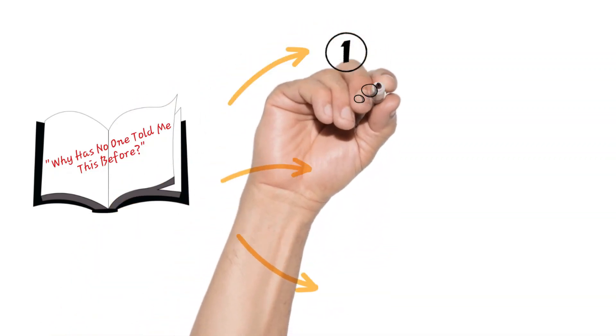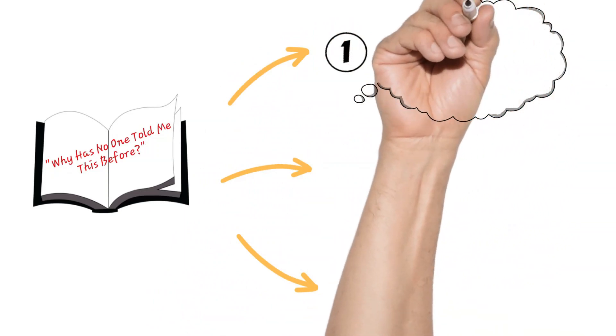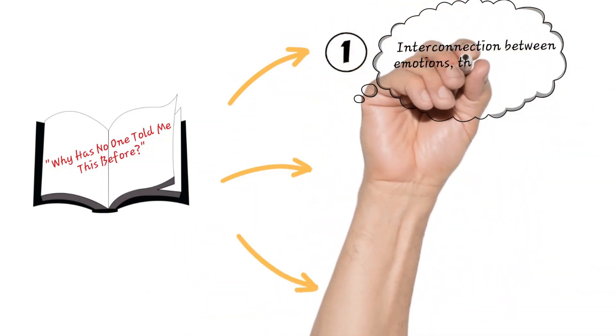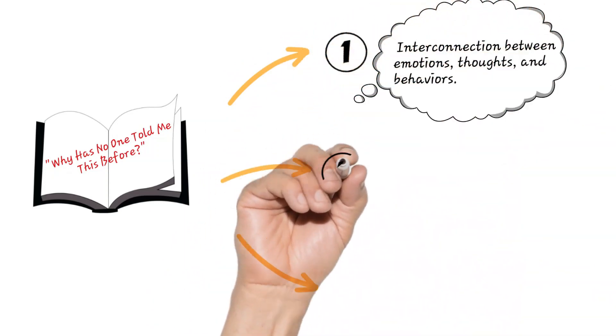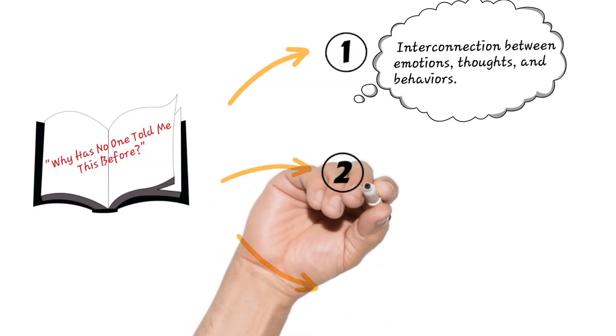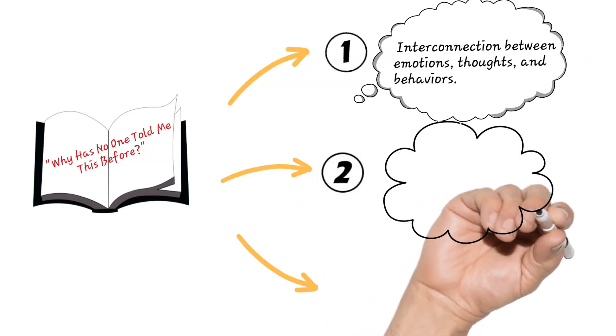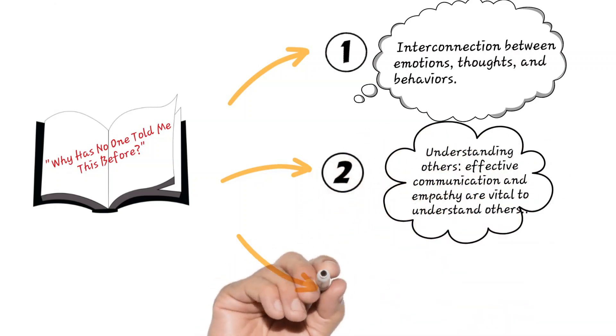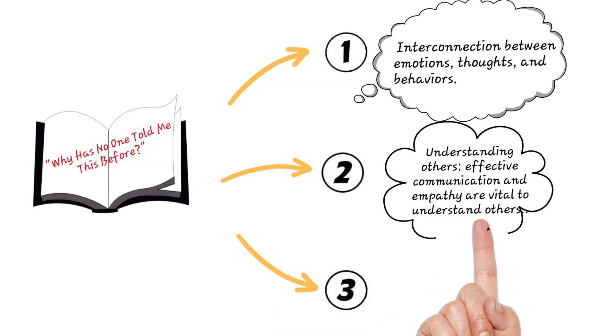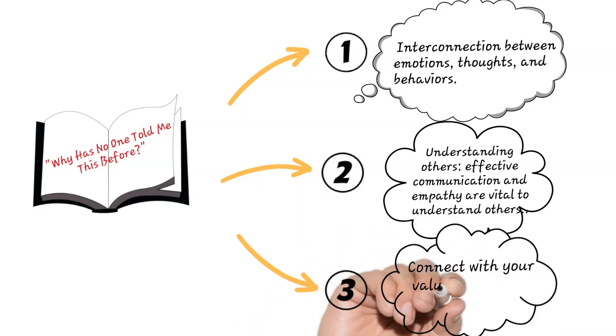The first section presents a framework for comprehending the interconnection between emotions, thoughts and behaviors. The second section is about understanding others through effective communication and empathy. Dr. Julie says that these two things are vital for building healthy relationships and the third section is about self-exploration for values and life purpose.